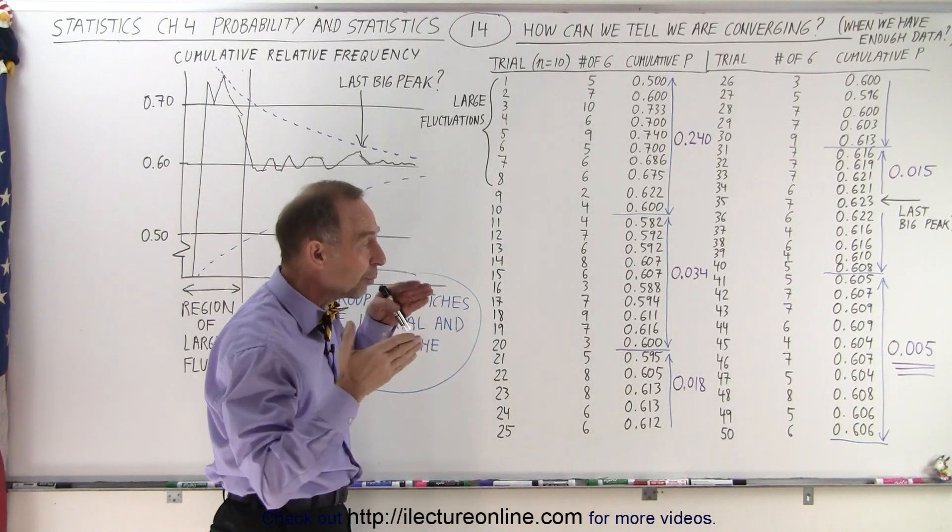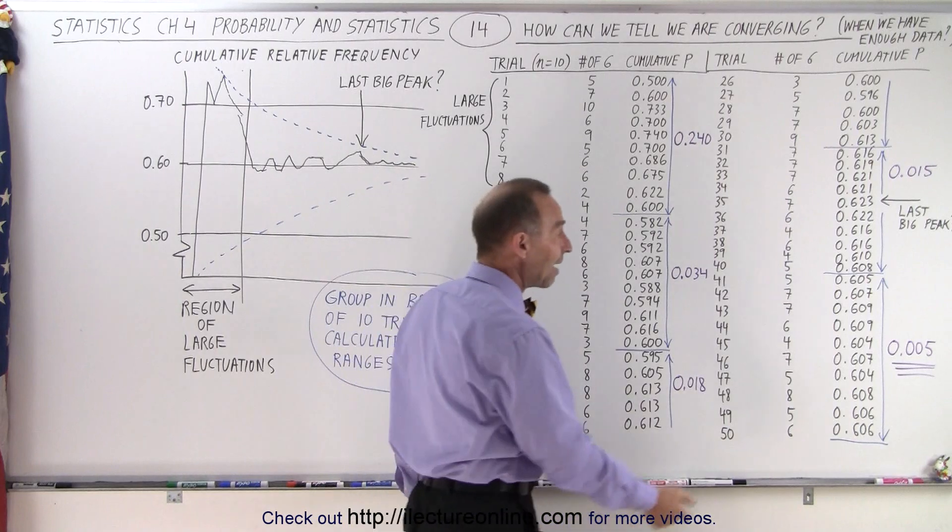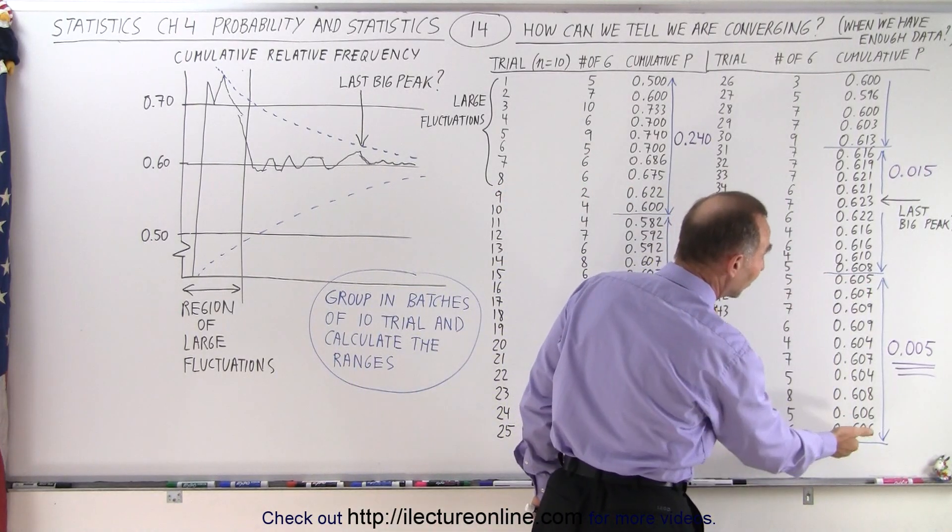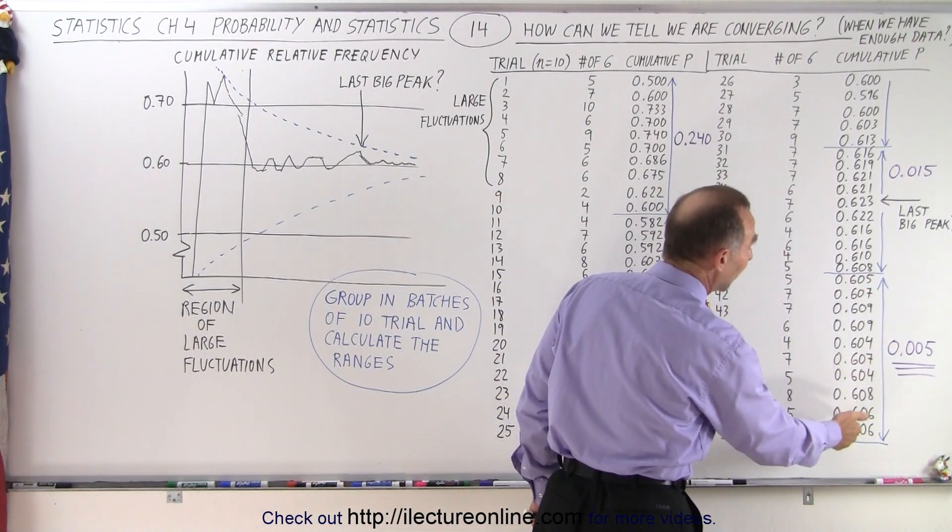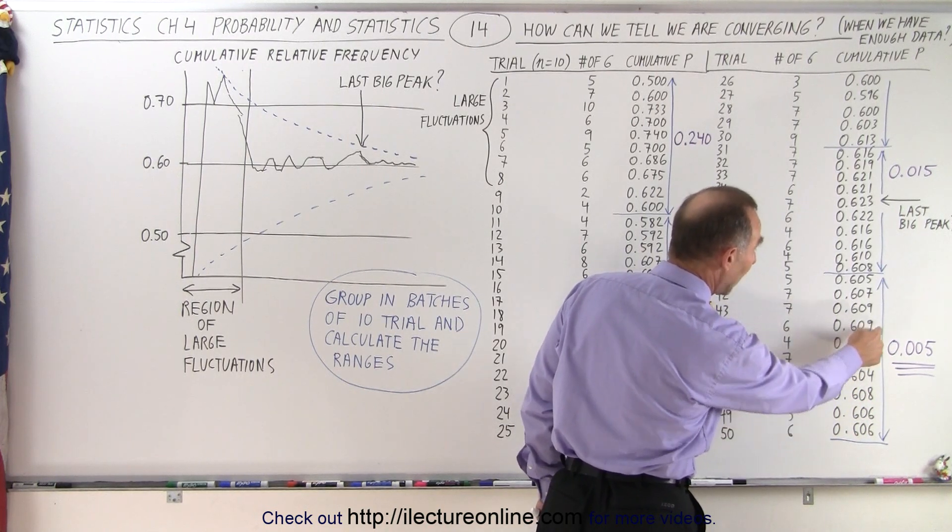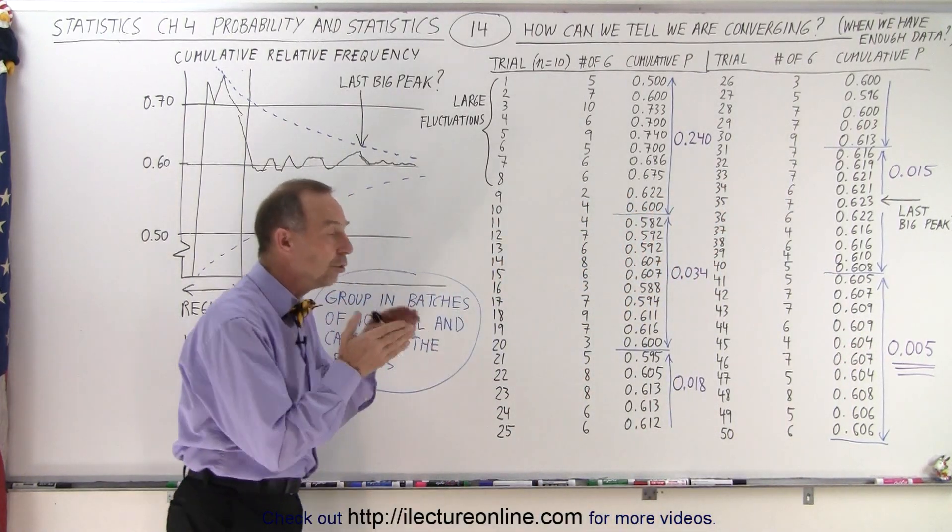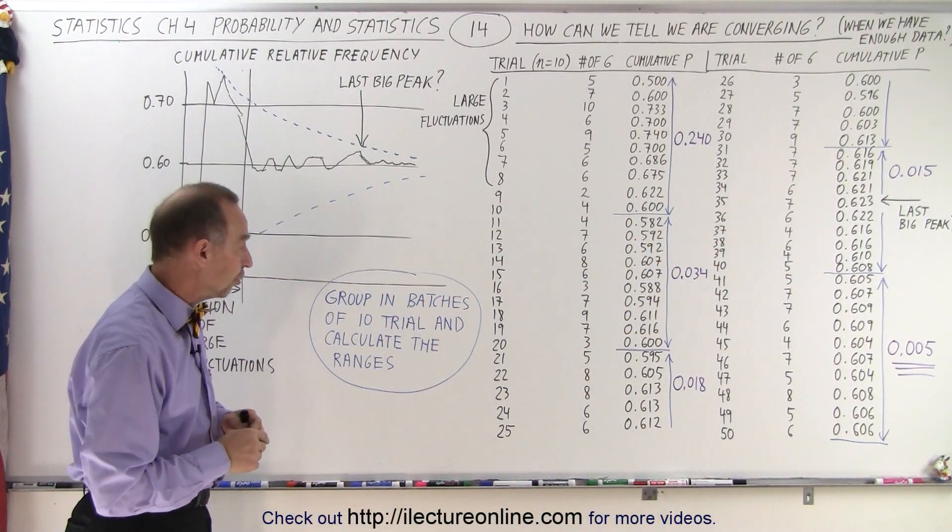So that means that the cumulative relative frequency was really beginning to converge. You can say that if you take the average of these values, then you might say that it will probably converge to some value between the lowest and highest. The lowest is 0.604, the highest is 0.609, so you know that you're getting close, probably to a number that you're converging to.